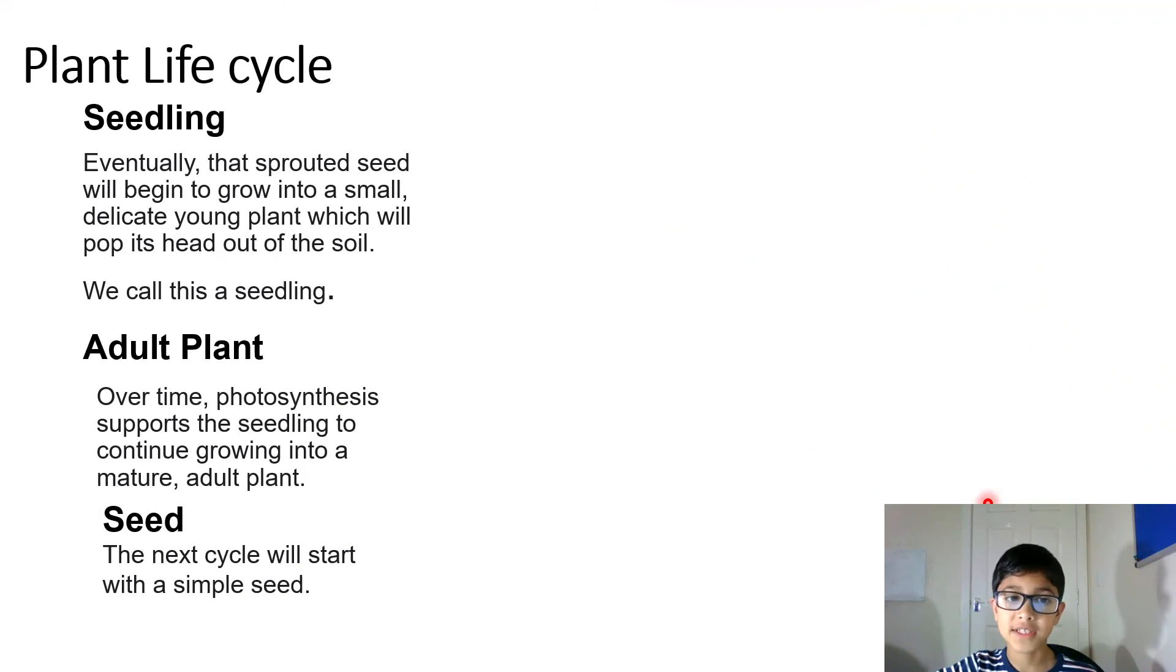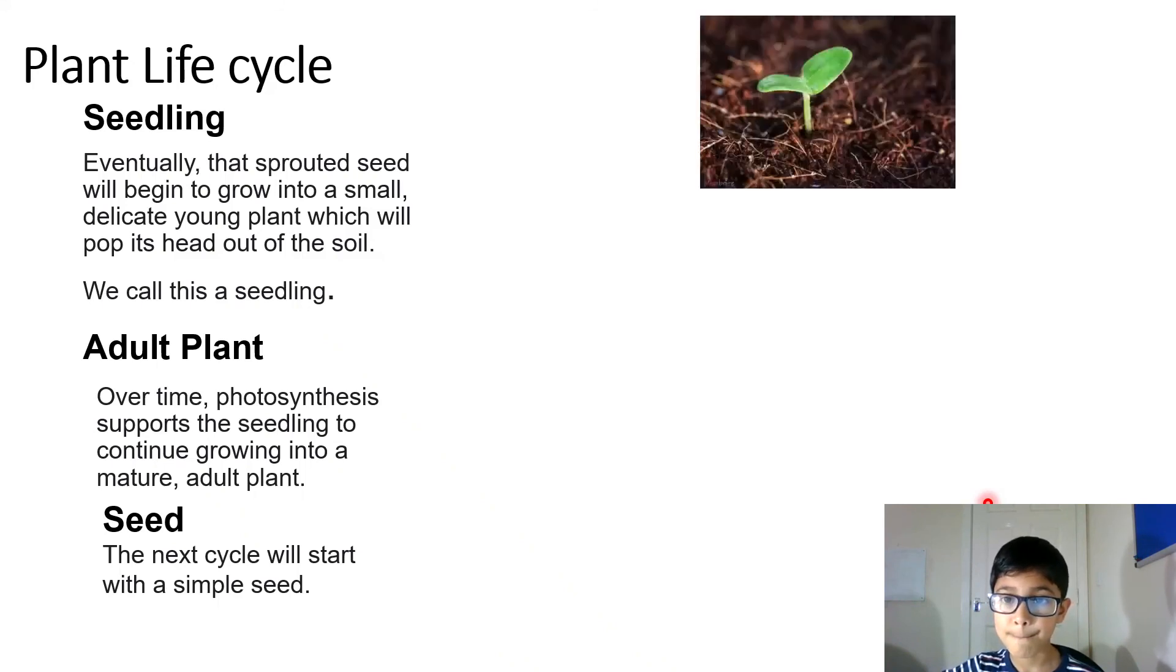Plant life cycle. Seedling. Eventually, the sprouted seed will begin to grow into a small, delicate young plant which will pop its head out of the soil. We call this a seedling. Oh, look at that little seedling. This is a seedling.